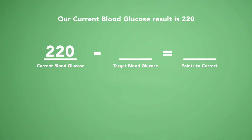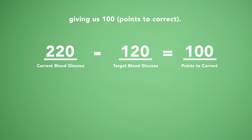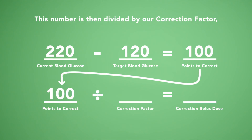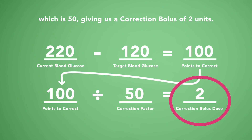Our current blood glucose result is 220 and our correction target blood glucose is 120. We then subtract 120 from 220, giving us 100 points to correct. This number is then divided by our correction factor, which is 50, giving us a correction bolus of 2 units.